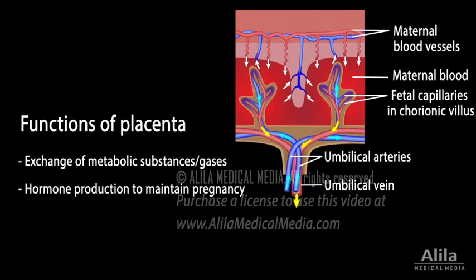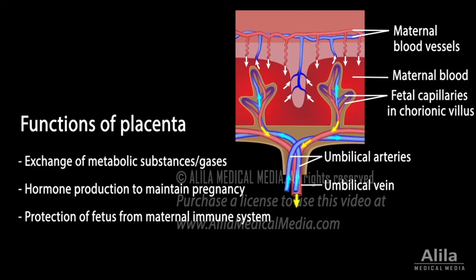The placenta is also permeable to lipid-soluble fetotoxic substances, which, if consumed by the mother during pregnancy, may cause harm to fetal development. Note that maternal and fetal blood do not mix because blood cells cannot move across the placenta. This separation protects the fetus, a genetically distinct and hence a foreign organism, from being attacked by the maternal immune system.